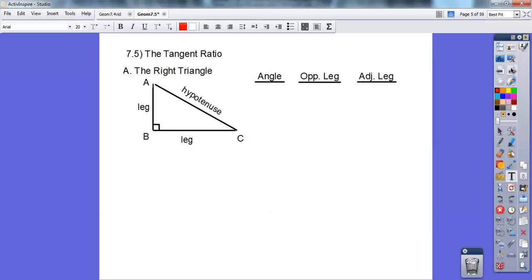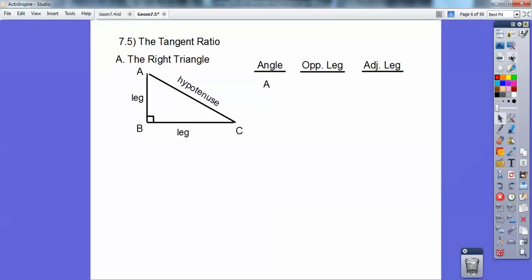So we're going to talk about the acute angles, angles A and angle C. With angle A, the opposite leg—let's go to angle A over here—here's angle A up there. It goes straight across and that's the opposite leg right there. So the opposite leg would be leg BC. And the adjacent leg is the leg that it's touching. Angle A is touching this leg, so the adjacent leg would be AB.